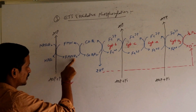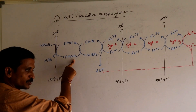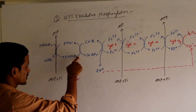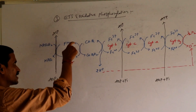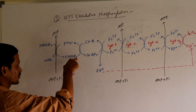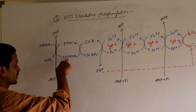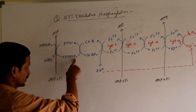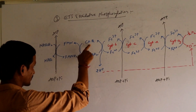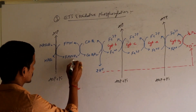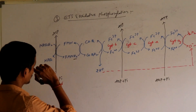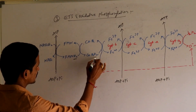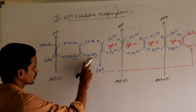FMN is reduced because H2 is taken by FMN, so it is reduced to form FMNH2. Then FMNH2 is again oxidized — H2 is removed — leaving FMN again. This H2 is taken by coenzyme Q, which is therefore reduced to form coenzyme QH2.